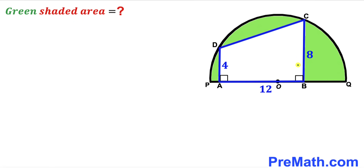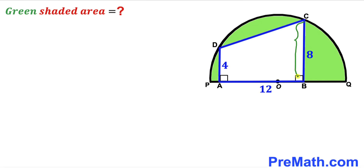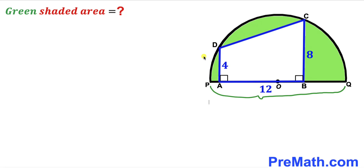Welcome to pre-math. In this video we have a blue trapezoid ABCD fully inscribed in a semicircle with center O. We are left with green shaded regions, and the given measurements are: perpendicular AD = 4 units, perpendicular BC = 8 units, AB = 12 units, and PQ is the diameter of the semicircle. Our task is to calculate the combined area of all the green shaded regions.